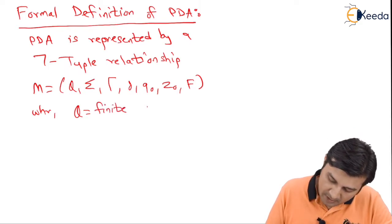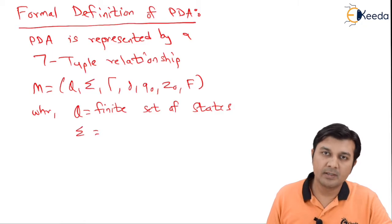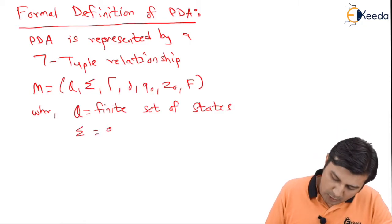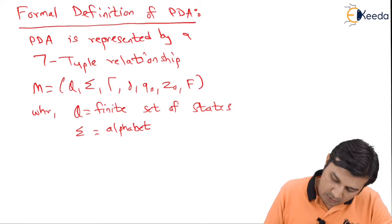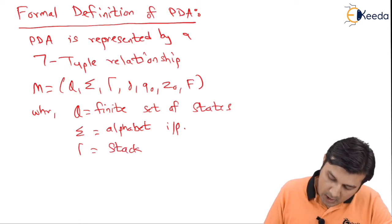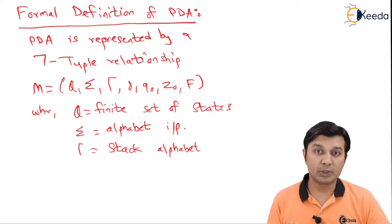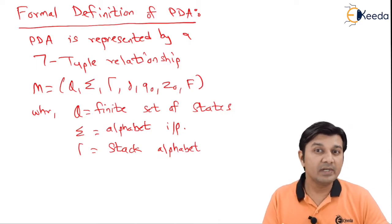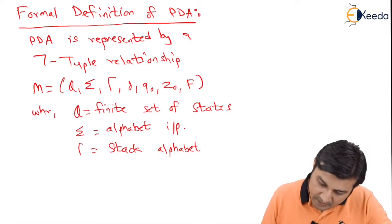Q is the finite set of states — that remains the same. Σ is the input alphabet — that is not going to change; these are very basic definitions of automata. Γ is going to be called as the stack alphabet. Everything that we are going to have on the stack will be called as stack alphabet. For example, the X we pushed on the stack and the Z already available on the stack are both stack alphabets.